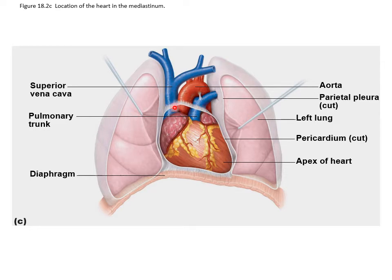Here is your superior vena cava, there's the aorta, and they're showing you the pulmonary trunk. These small flap-looking structures here are actually the atria, and this is the ventricle here at the bottom.